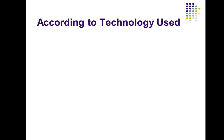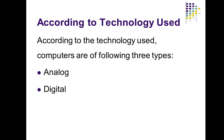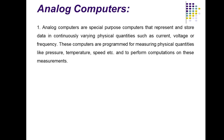We can also classify computers according to technology used. According to the technology used, computers are of three types: analog computers, digital computers, and hybrid. Analog computers are special purpose computers that represent and store data in continuously varying physical quantities such as current, voltage, or frequency. These computers are programmed by measuring physical quantities like pressure, temperature, and speed to perform computations on these measurements.